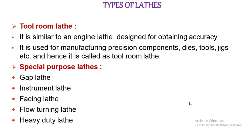Next, special purpose lathe. A large number of lathes are called special purpose lathes. They are designed to perform certain specified operations only. Examples include crankshaft lathe, duplicating lathe, and NC lathe.